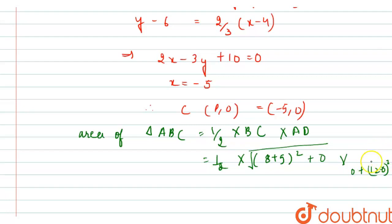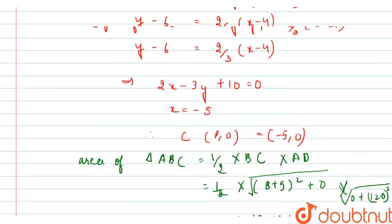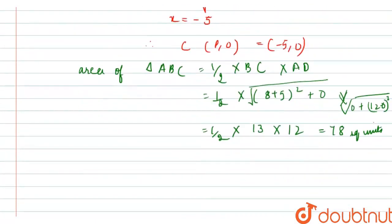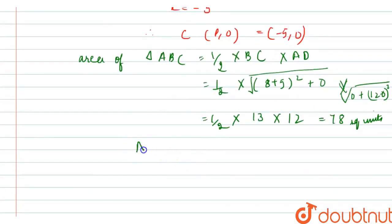Solving we get, it is equal to half into square root of 13 times 12. So that comes out to be 78 square units. Since in the question we are asked to find A upon 13, it means A upon 13 equals 78 upon 13, that comes out to be 6.